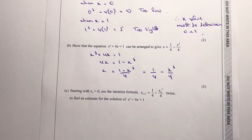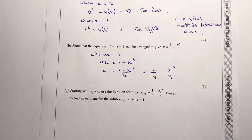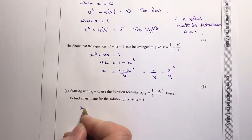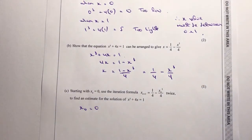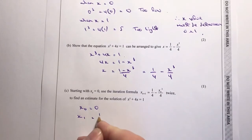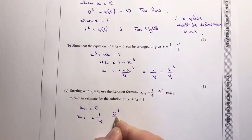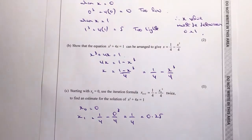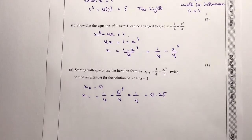The iteration formula we've derived can be used to find an estimate for the solution. Iteration is one of the newer GCSE topics — there's a playlist on the channel if you want more practice. We start with x₀ = 0, then plug that into the formula. The next value is x₁ = 1/4 − (0)³/4 = 1/4 = 0.25.